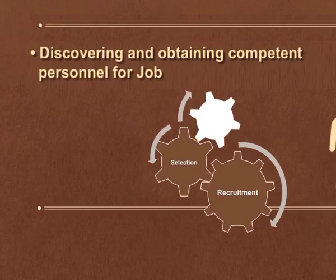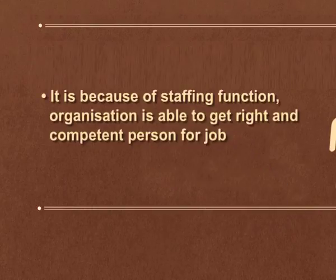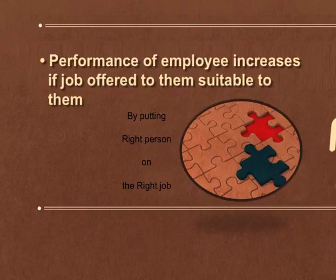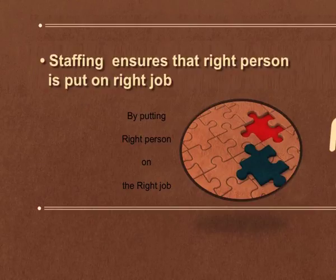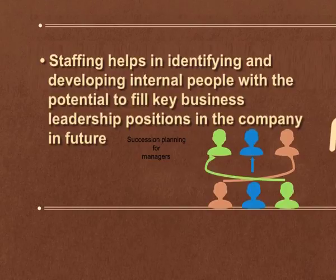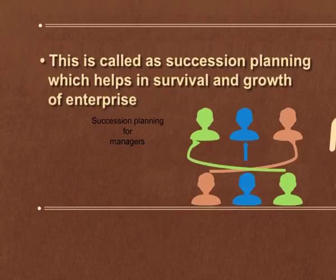Let us discuss these points in detail. First, discovering and obtaining competent personnel: because of the staffing function, the organization is able to get the right and competent personnel through a proper recruitment and selection process. Second, higher performance: performance of employees increases if the job offered is suitable to them, and staffing ensures the right person is put on the right job. Third, continuous survival and growth: staffing helps identify and develop internal people with the potential to fill key leadership positions in the future — this is called succession planning, which helps in survival and growth of the enterprise.